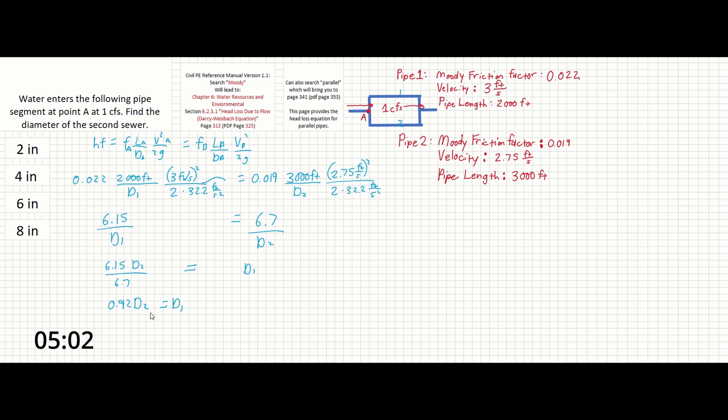So this is how we solve d1 in terms of d2. Next we can solve the flow equation which is the other equation given in page 341. So we can solve that equation in terms of d2 to find the diameter of the second pipe. So that was step one.